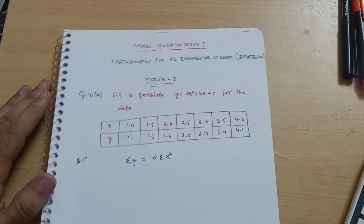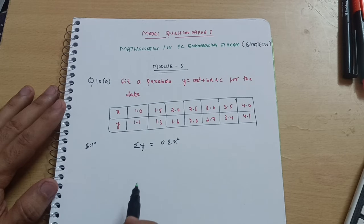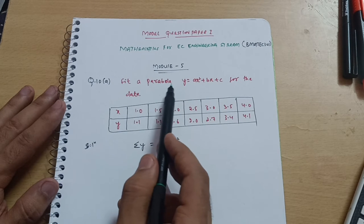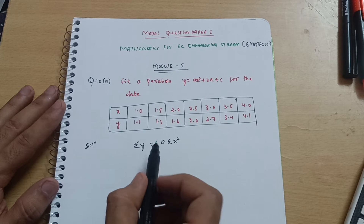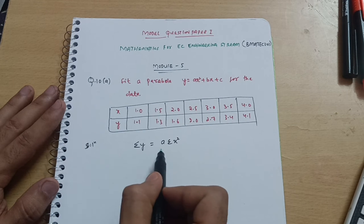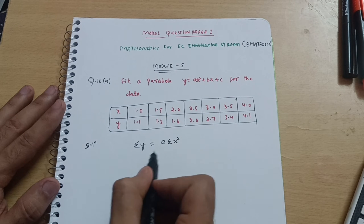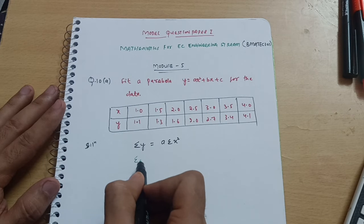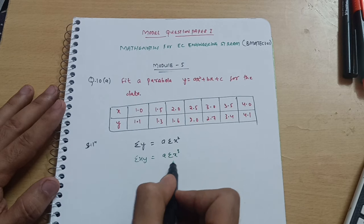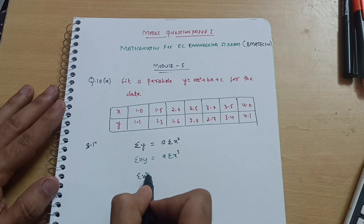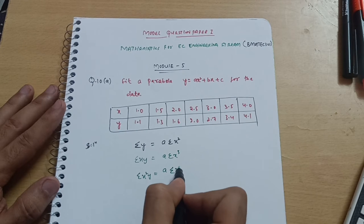In the solution, you have to remember some standard equations for this particular topic. There are three standard equations for the parabola curve. They are easy to remember. Summation of y = a·Σx² — and it is in increasing order: summation of xy = a·Σx³, and summation of x²y with a·Σx⁴.